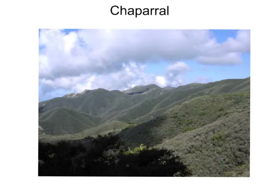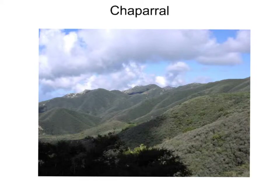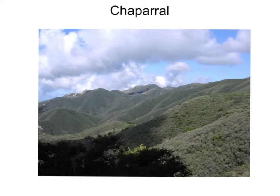The chaparral biome is coastal, characterized by dense spiny shrubs with tough leaves. Those shrubs are often coated with a thick cuticle to keep them from losing moisture, but this also makes the plants more flammable, so chaparral biomes see pretty frequent fires. The organisms of the chaparral are often adapted to or maintained by periodic fires. The chaparral biome is found on the coasts of California, Chile, southwest Africa, southwest Australia, and around the Mediterranean Sea. Plants from all these different regions are unrelated but share similar adaptations and sometimes appearance.